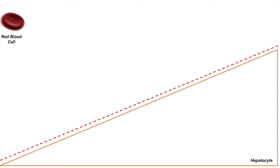Hey guys, JJ here. In this lesson I'll be talking to you guys about heme catabolism or heme breakdown. Now, in your body, your red blood cells are continually turning over or being degraded in a process called hemolysis.